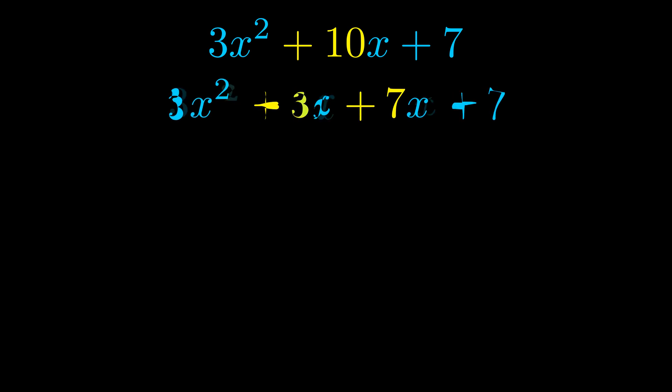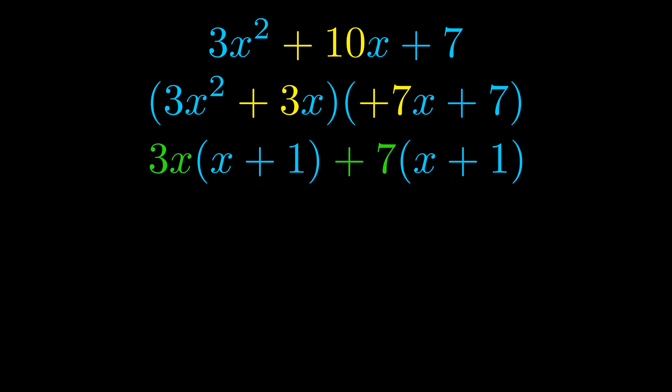Once we've done this, we put parentheses around the first term and the last term. And we do that so that we can take the greatest common factor out of both terms. We can see the greatest common factor is now outside in green. Notice also how what remains inside the parentheses is the same in both cases.